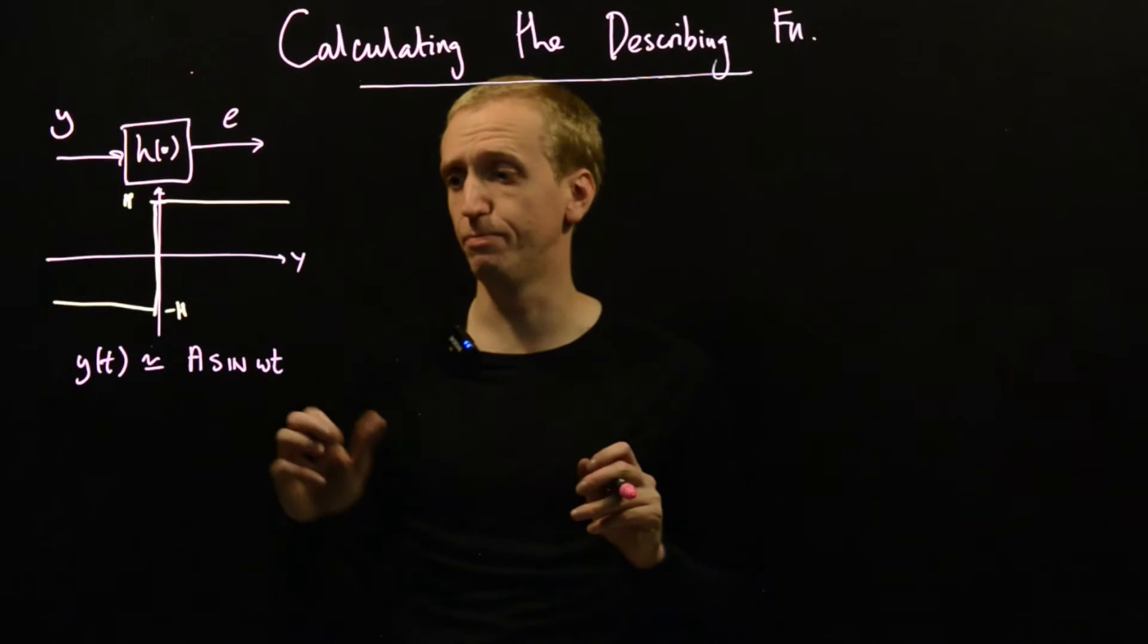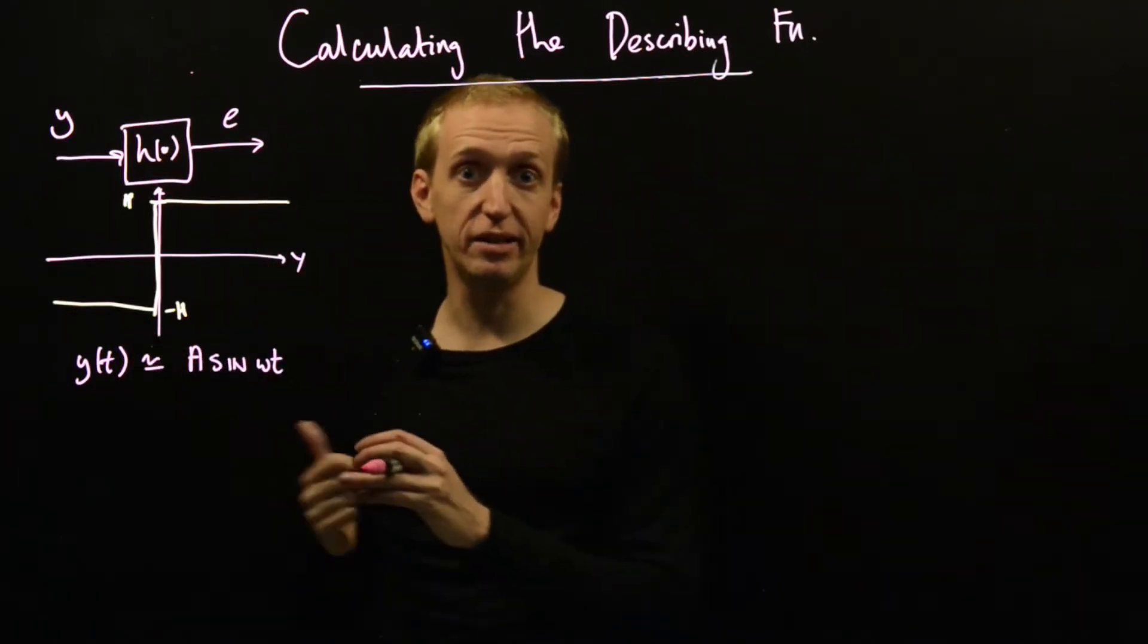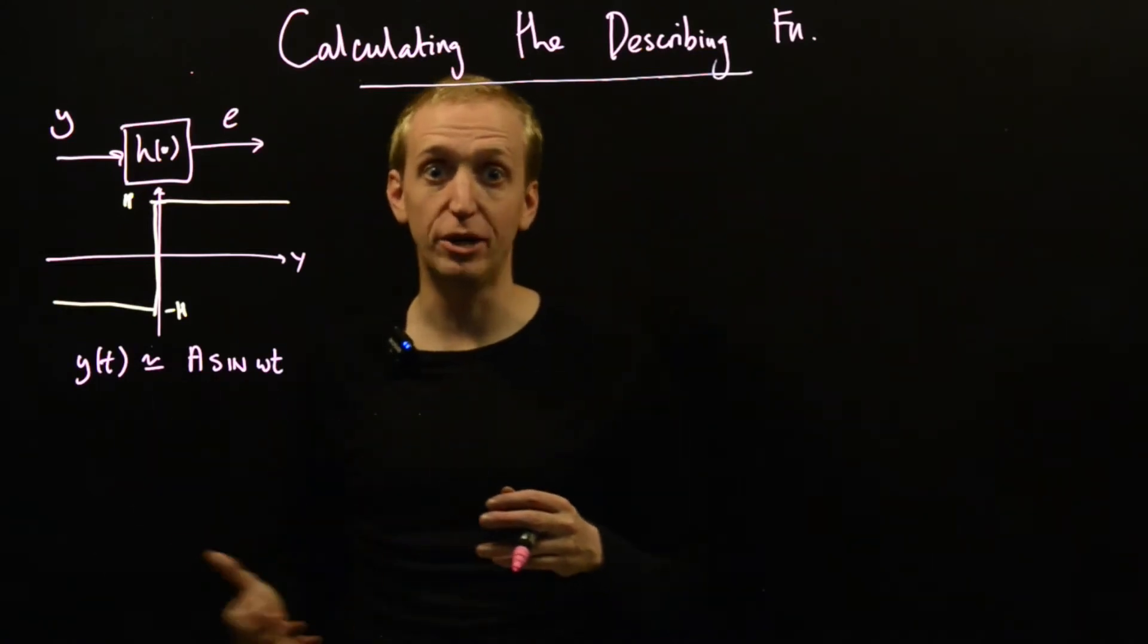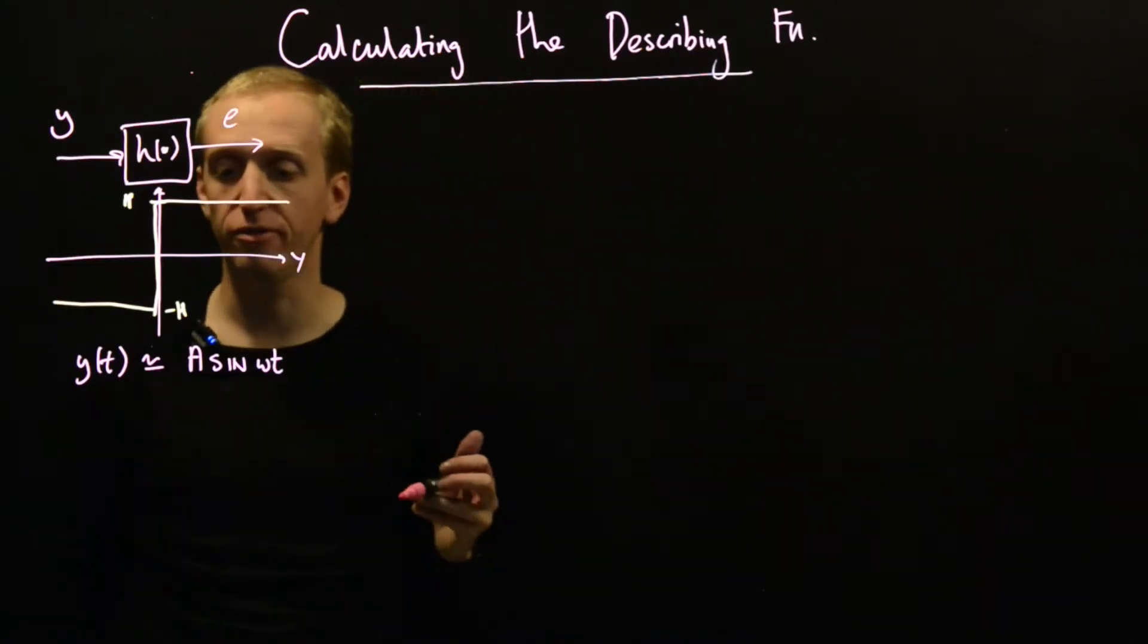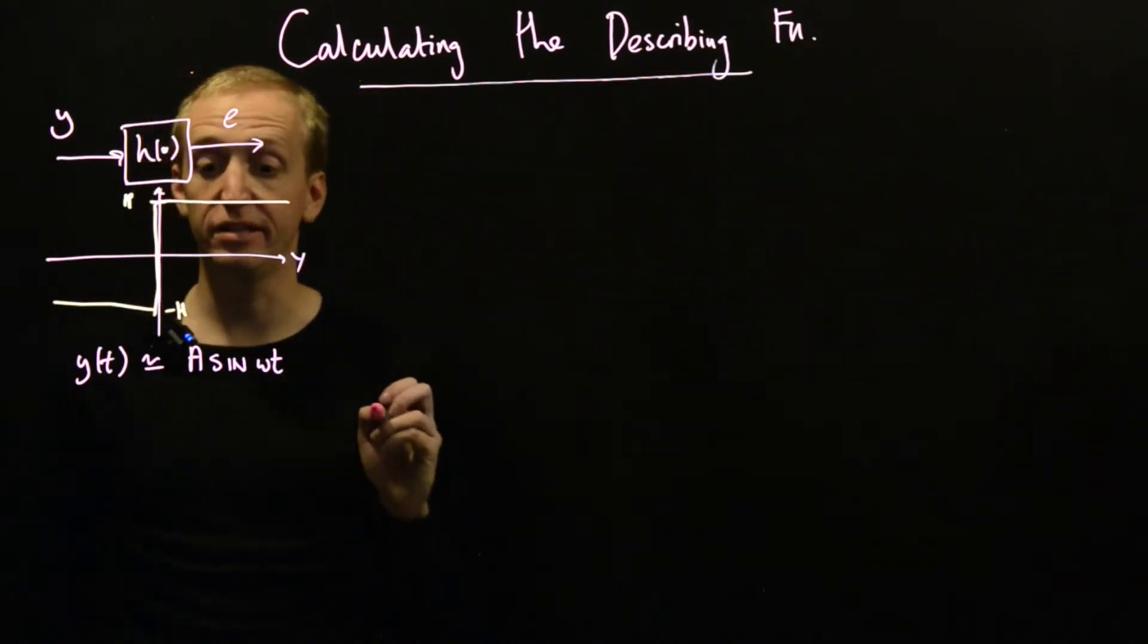And the describing function is just based on tracing this signal around the feedback loop and finding the conditions under which you approximately find that all the equations are balanced. And this was the condition of harmonic balance. And to do this, we calculated the describing function.